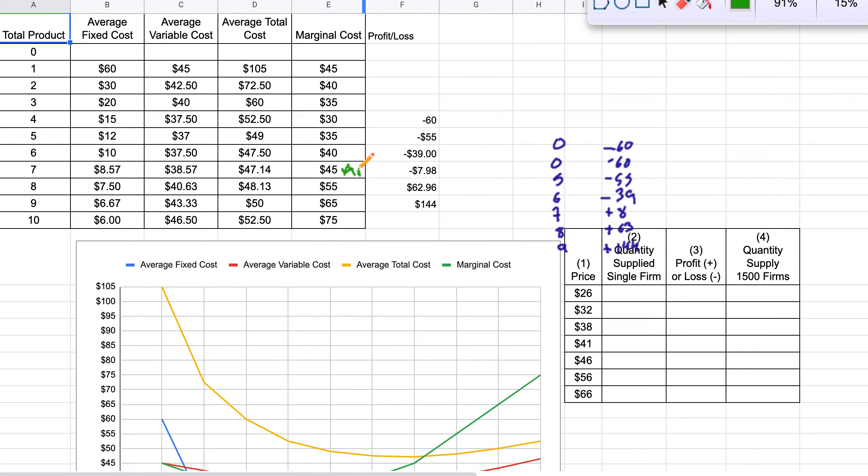This is about as close as we get. MC equals MR right here. So we are going to produce seven of these things.